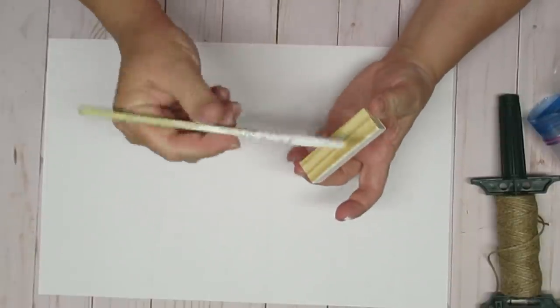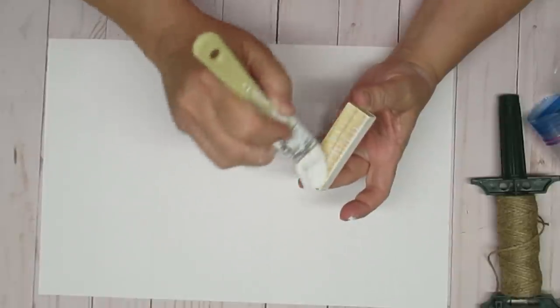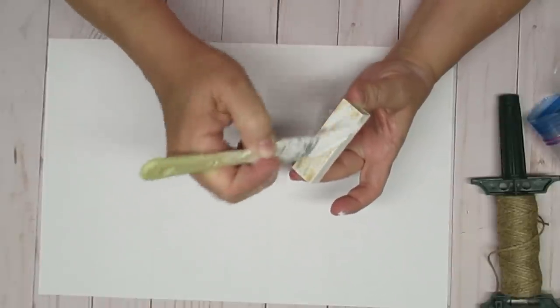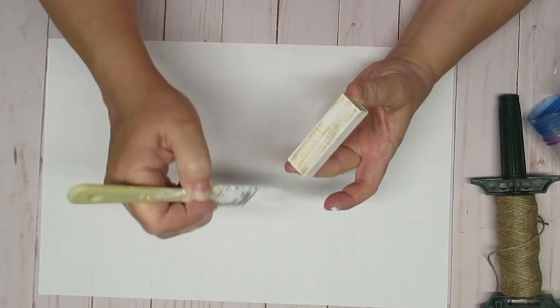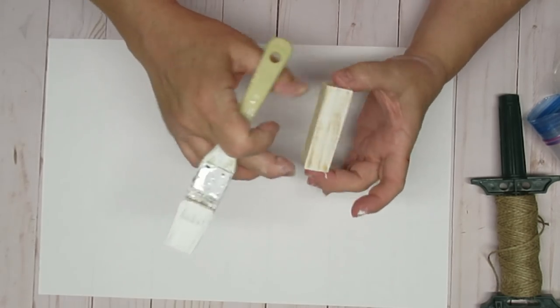So I'm using one of these medium-sized tumbling tower blocks. I'm just giving it a dry brush in white because I want a little bit of that wood to show through and give it a rustic look.